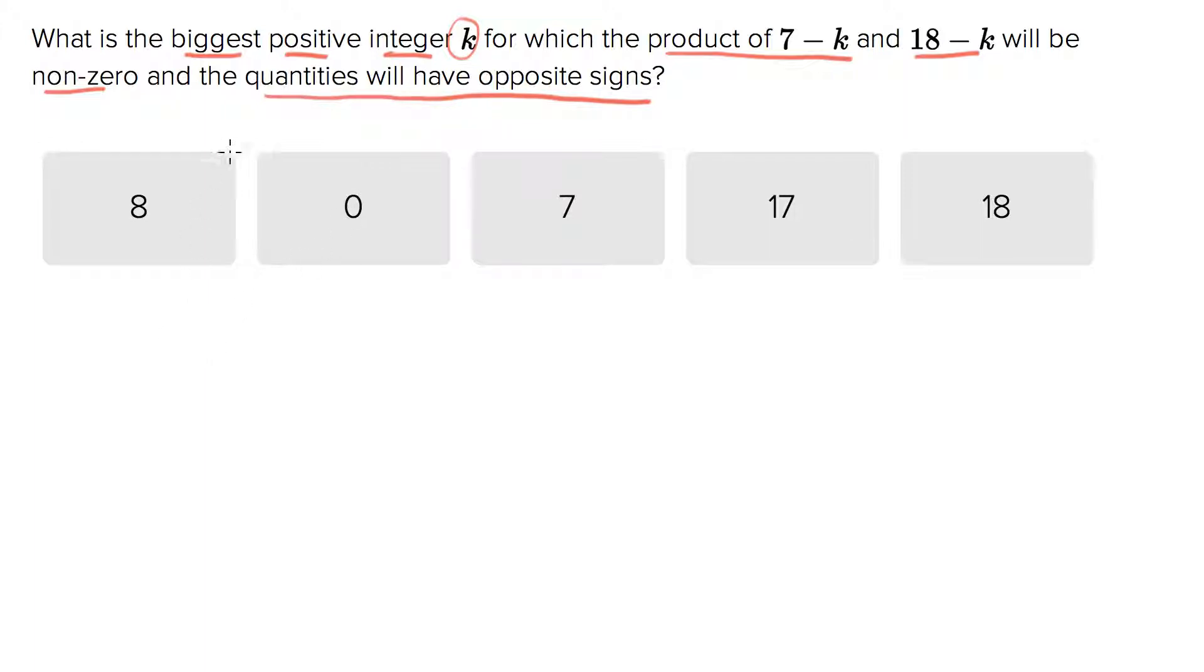Some of them I'm going to keep track of in my head. For example, k needs to be a positive integer—I'll just think of those as normalish numbers. I'm going to look for the biggest possible thing for k, and the things I need to track are this number 7 minus k and this number 18 minus k. So let me draw you a little chart to show you what's in my head. I'm going to keep track of k, 7 minus k, and 18 minus k.